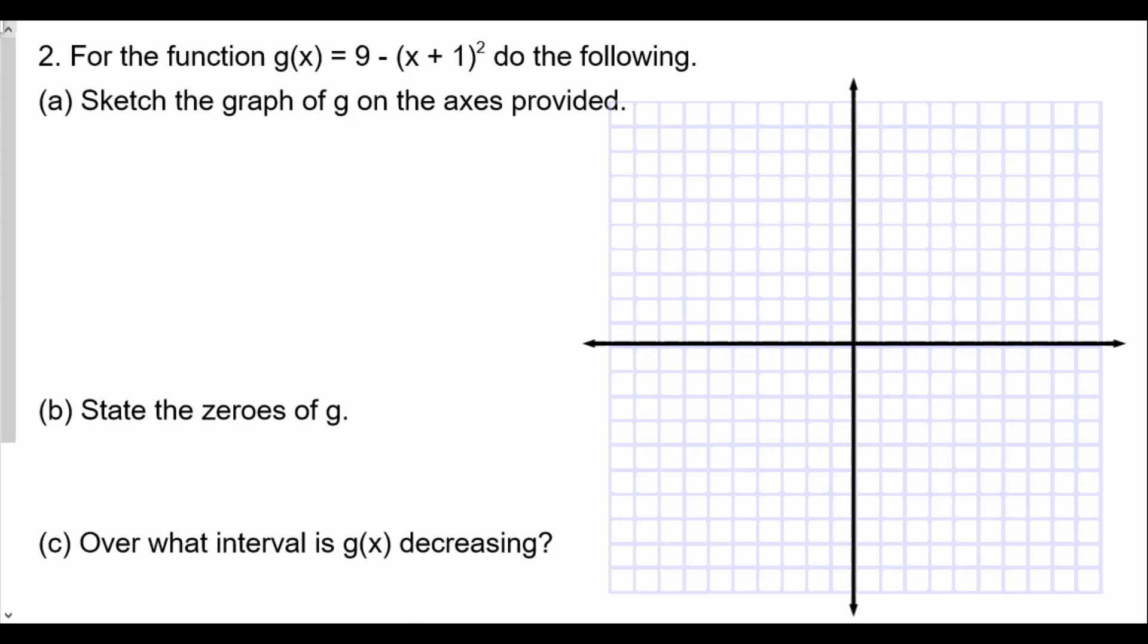The vertex form is given as y = a(x - h)² + k, where (h, k) is going to be our vertex. Looking at this, we see that g(x) = -1(x + 1)² + 9.